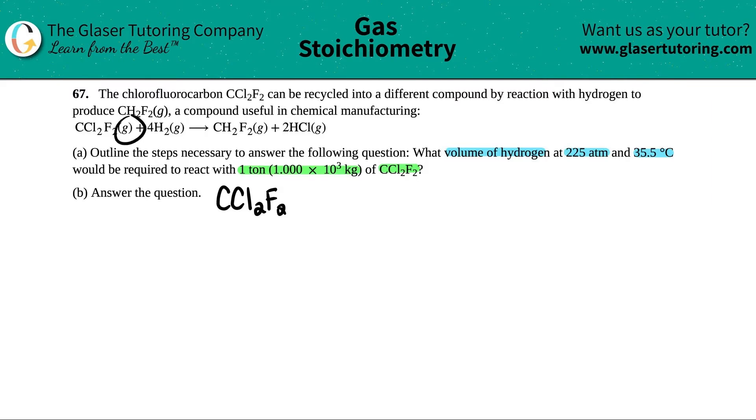Who cares about the states, not equilibrium chapter, so we don't care. So CCl2F2 plus 4H2 yields CH2F2 plus 2HCl. You could pause the video to make sure this is balanced, but since I already see coefficients in front of some compounds, I'm going to assume it's balanced.